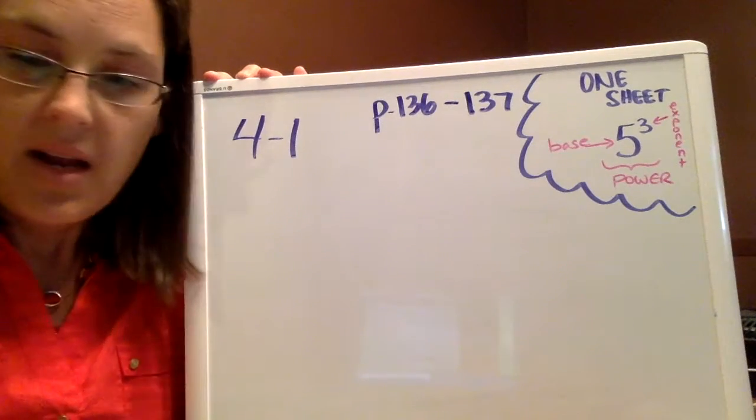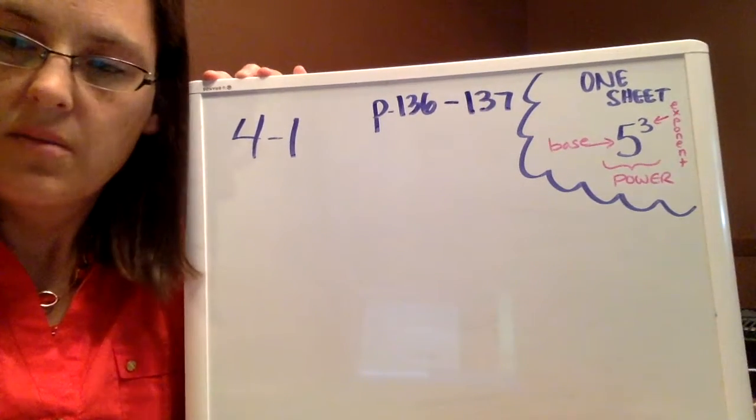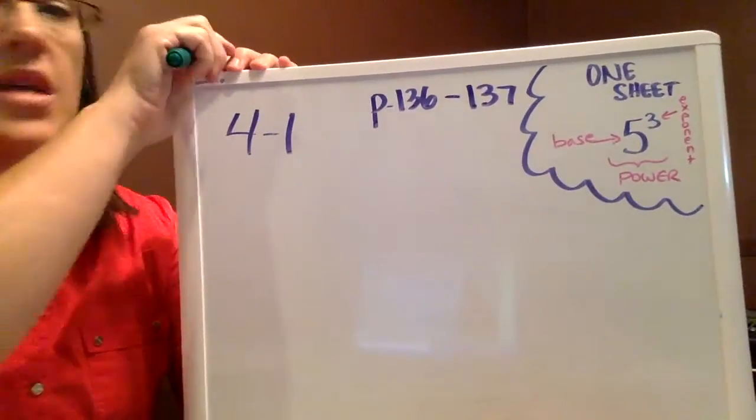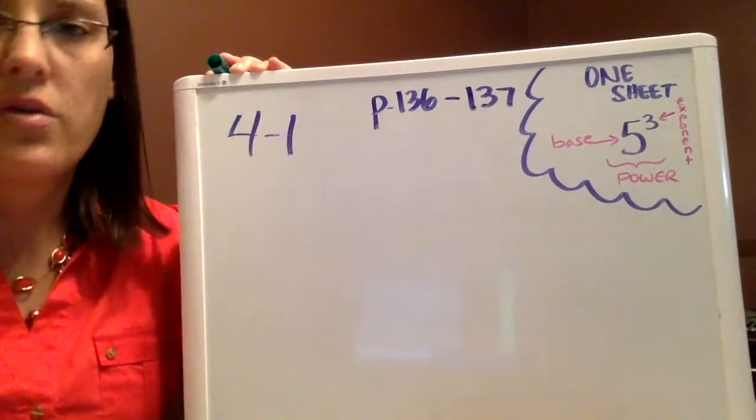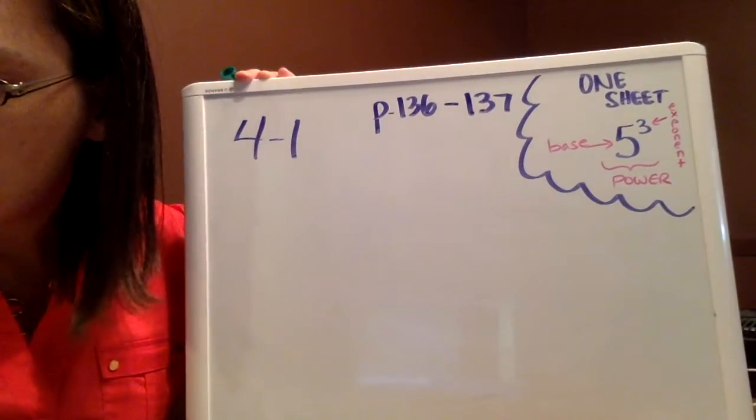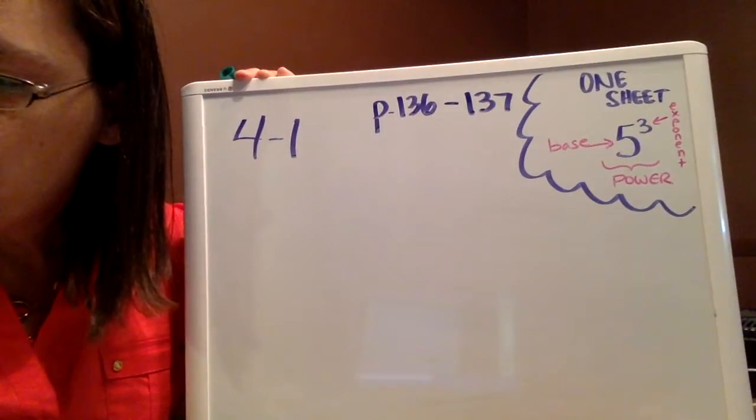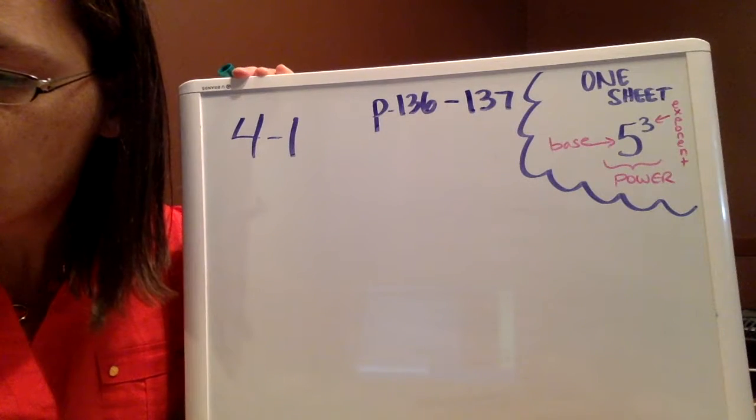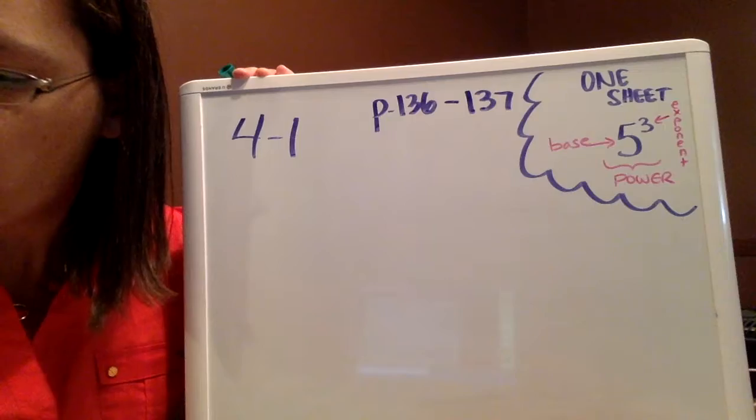I think it's important to go over some examples together, and so I'm on page 136. You can write these down in your notebook and follow along with me and see how you do. For example 1, we're just going to rewrite those expressions using exponents. You can look at a, b, and c that are done for you.